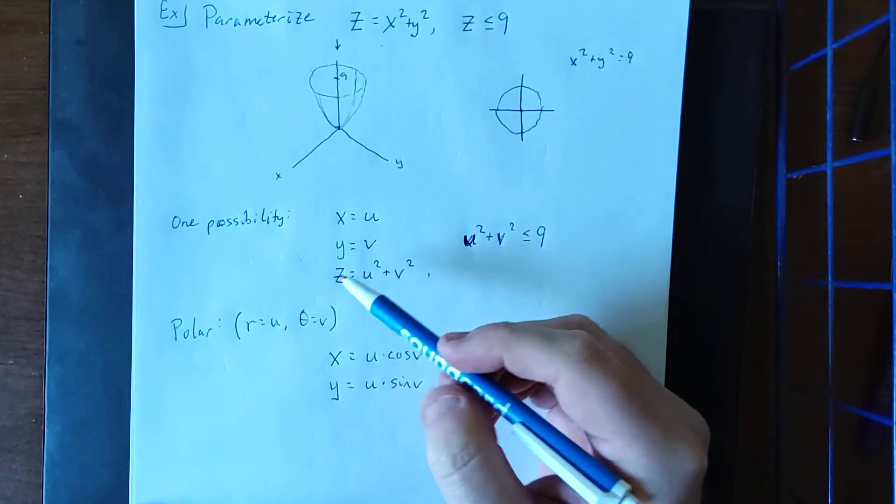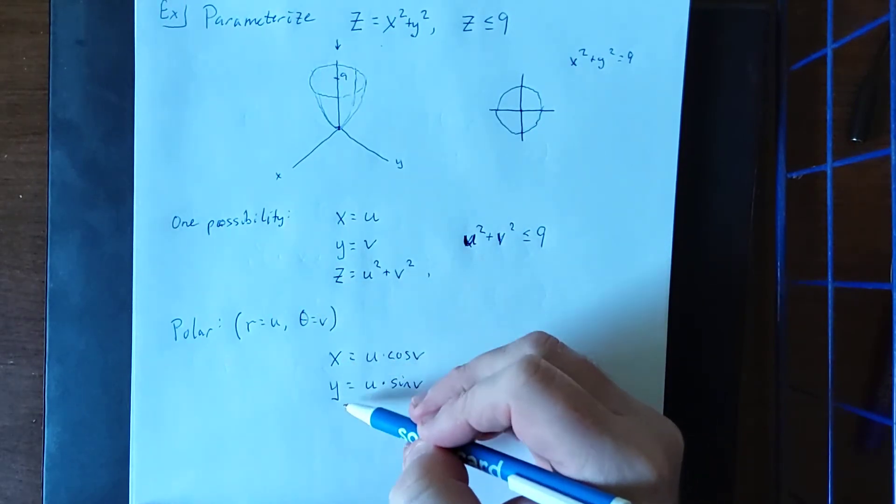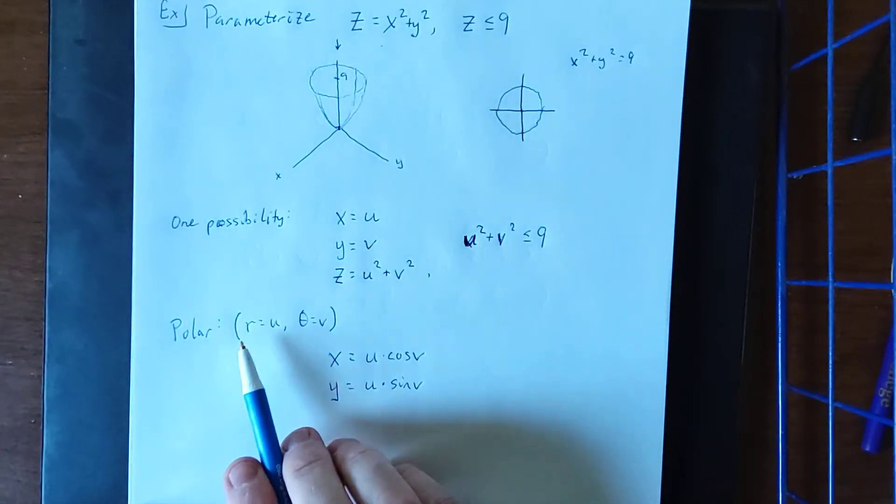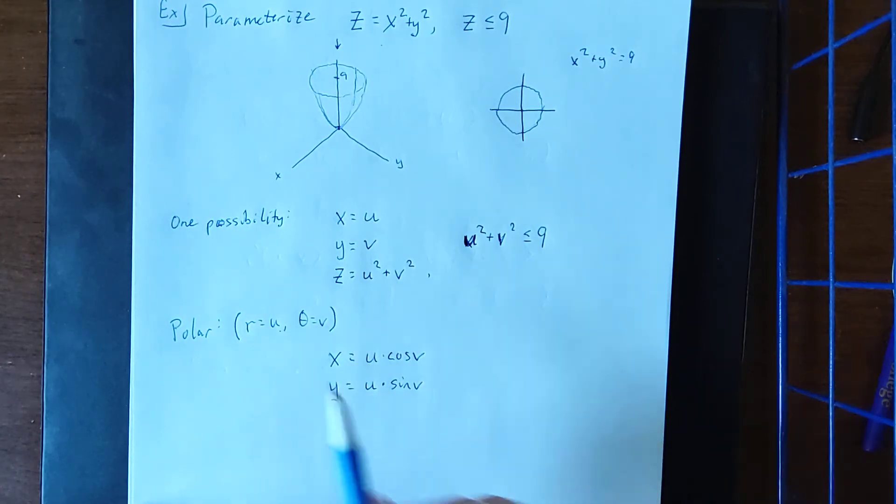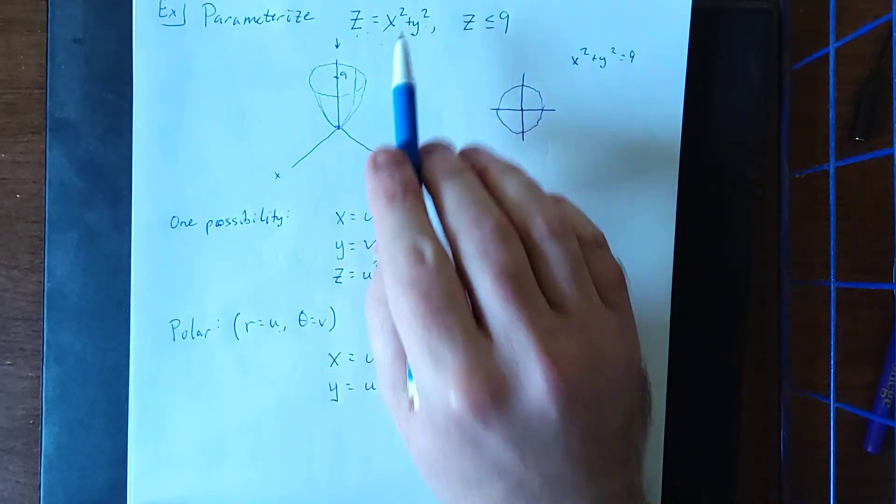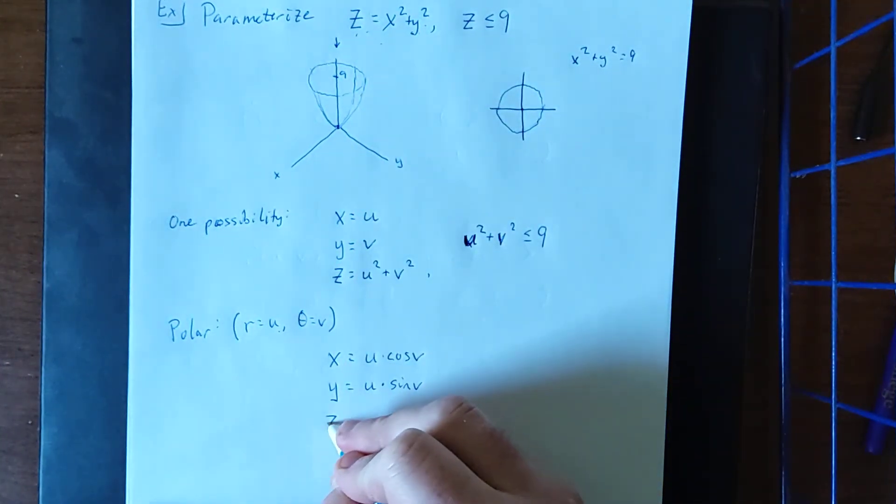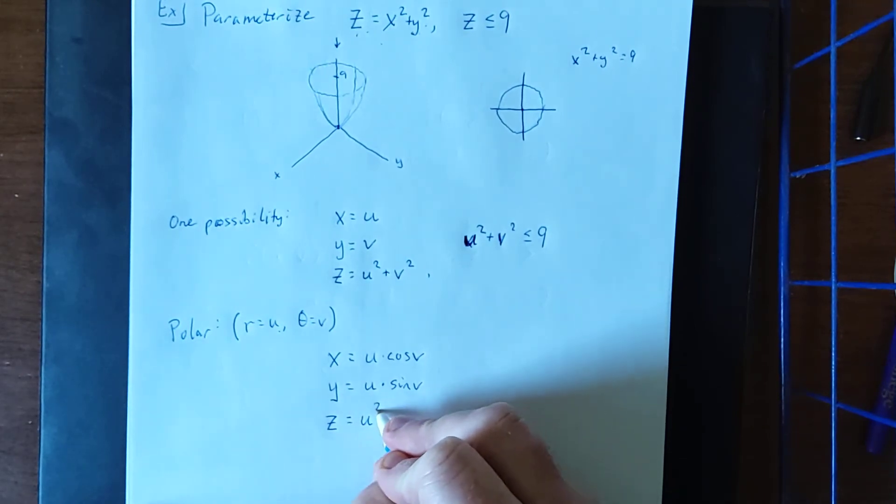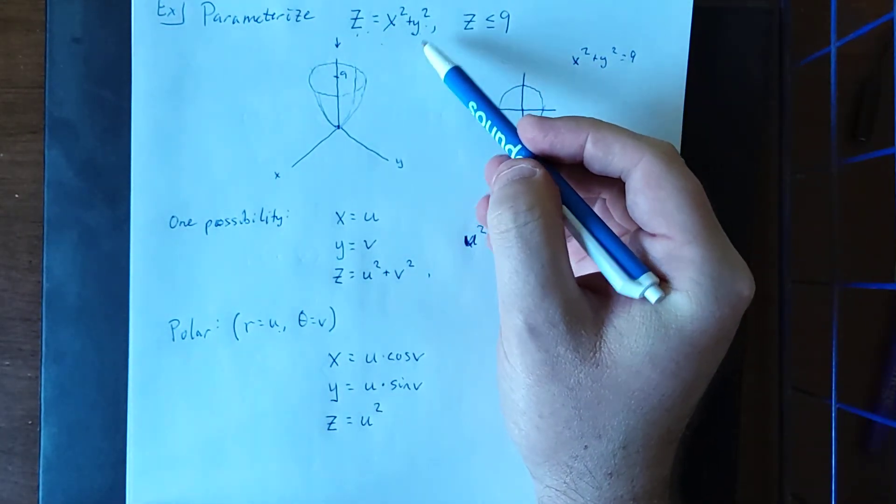Additionally, we can also think to ourselves what then would x squared plus y squared be equal to? Normally it would be r squared, or in this case u squared, which means that as far as z is concerned, we can say that z is going to be equal to u squared. That would be our x squared plus y squared.